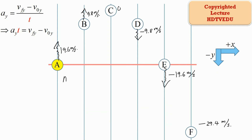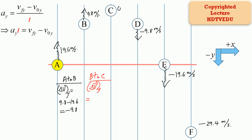From A to B, the change of velocity along the vertical — final is B, initial is A — is 9.8 minus 19.6, which equals negative 9.8. From B to C, the change of the velocity vector along the vertical is: final C minus initial B, which is 0 minus 9.8, and that is negative 9.8.